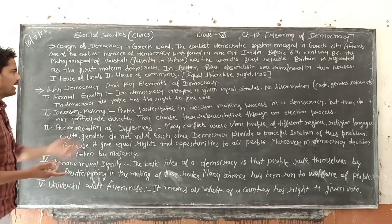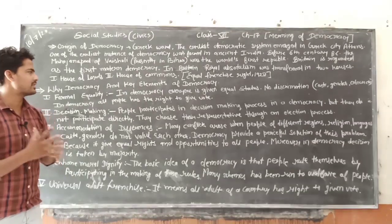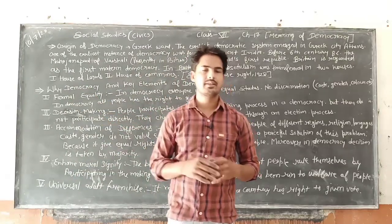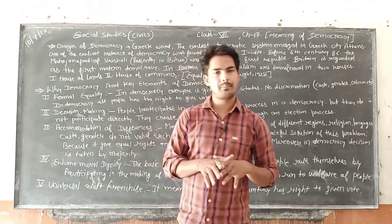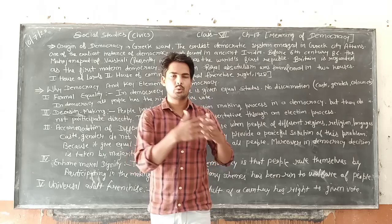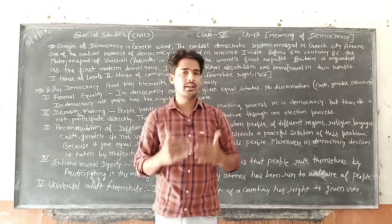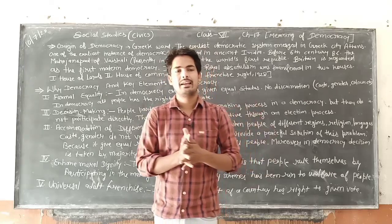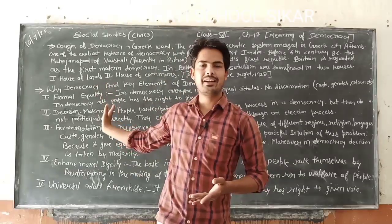Why is democracy needed? Democracy is the rule of people, by the people, for the people. In democracy, people rule through an elected representative. If we rule ourselves, we can solve any problem. But if one king has all the rule, he will govern only according to himself. That is why democracy is needed.